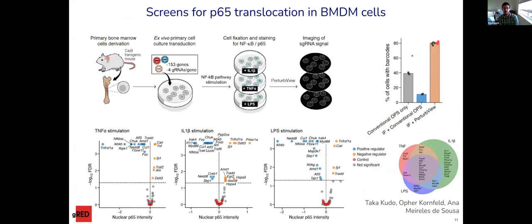As a proof of concept, we did a P65 translocation screen in primary mouse BMDM cells — the first primary cell OPS screen published in the literature. We take a CAS9 mouse, transduce with a small library, activate cells with different cytokines or LPS, and look at guide RNA signal and P65 immunofluorescence. In BMDMs, we get about a 50% decrease with conventional OPS versus PerturbView, and combining phenotyping methods like immunofluorescence with standard OPS takes even more of a hit. PerturbView gets essentially no hit to efficiency. Across all stimulations, we recover expected genes — TNF receptor for TNF stimulation, IL-1 receptor for IL-1 stimulation, and core NF-kappa-B pathway genes for LPS.